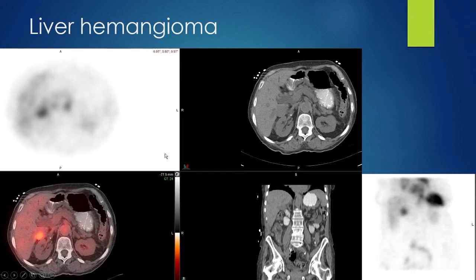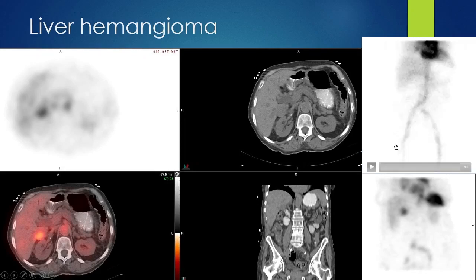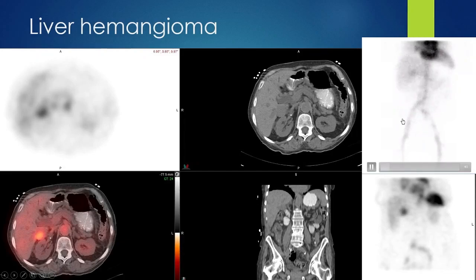Here is a case of a hemangioma on delayed imaging — the early images would show a slightly photopenic area that's hard to see, shown here alongside a diagnostic CT for anatomic correlation. On a GI bleeding study done a few months later for the same patient, only mild accumulation of blood pool is visible on the planar image at 60 minutes in the relevant area.